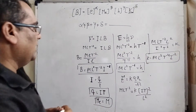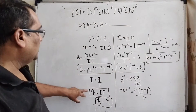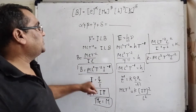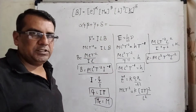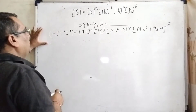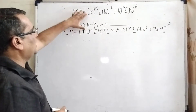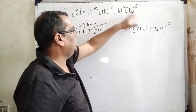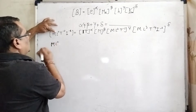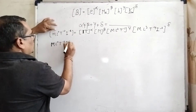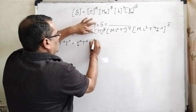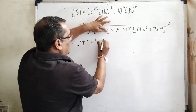Now we have all the dimension formulas: B, charge e, mass mₑ, Planck's constant h, and k. Now substitute all these values in the given expression B = eᵅ mₑᵝ hᵞ kᵟ. This gives M L⁰ T⁻² I⁻¹ = (IT)ᵅ × Mᵝ × (ML²T⁻¹)ᵞ × (ML³T⁻⁴I⁻²)ᵟ. Now simplify by collecting powers of M, L, T, and I.